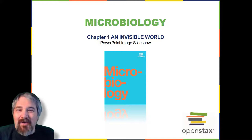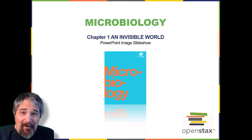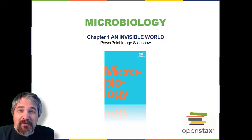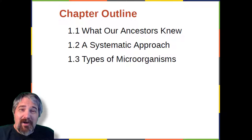Hello, and welcome to a casual reading of the OpenStax textbook, Microbiology. This is Chapter 1, an introductory chapter to the subject of microbiology. We begin with an invisible world. This chapter is divided into three sections, which talk about what our ancestors knew, a systematic approach to microbiology, and an introduction to types of microorganisms.